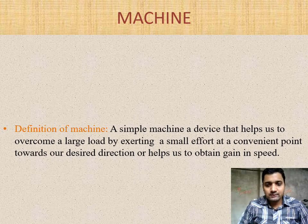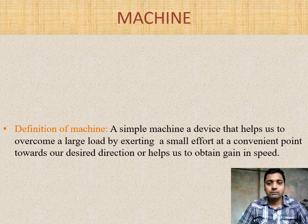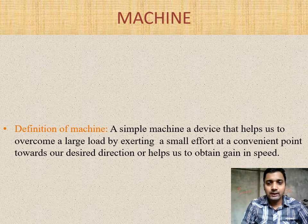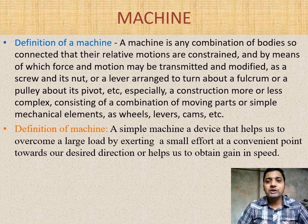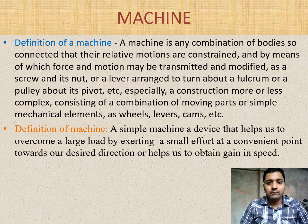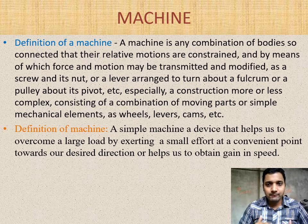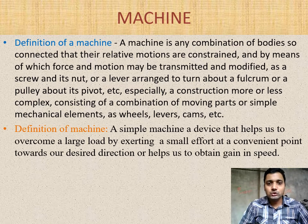If you recall the film 3 Idiots, there is a long definition given by a bookworm character. According to that, the definition of a machine is: 'A machine is a combination of bodies so connected that their relative motions are constrained, and by means of which force and motion may be transmitted and modified.' It also refers to a screw, a lever about a fulcrum, a pulley about its pivot — a construction consisting of a combination of moving parts or simple mechanical elements such as levers.